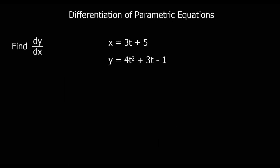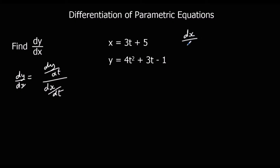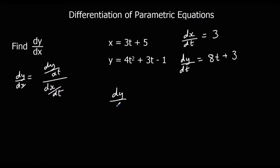Here's another question — if you want to pause the video, give this one a go. Find dy/dx. So dy/dx is dy/dt over dx/dt. dx/dt is 3t plus 5 differentiated, which is 3. And dy/dt: 4t squared plus 3t minus 1 differentiated, which is 8t plus 3. So dy/dx is dy/dt, 8t plus 3, over dx/dt, 3.